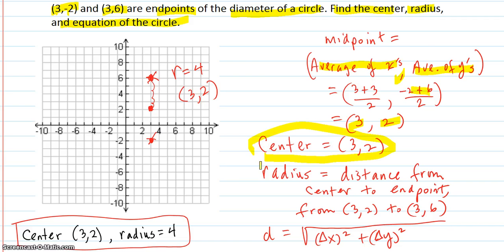So the center checks out to be (3, 2). But that's how you would get it if it was more complicated. The midpoint between the two endpoints.